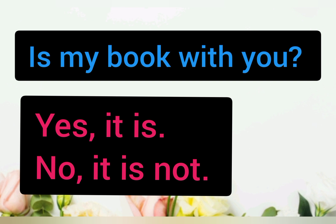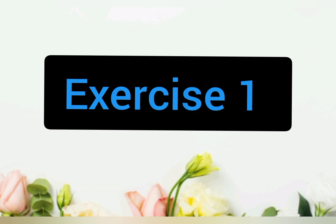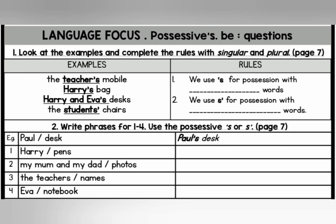And the last question is: is my book with you? So the answer will be yes it is or no it is not. Alright, let's do the exercises together — mari kita buat latihan bersama-sama. In this exercise you have to look at the examples and complete the rules with singular and plural. Number one: we use apostrophe S for possession with — you should write singular or plural.